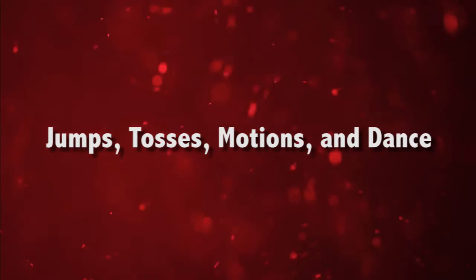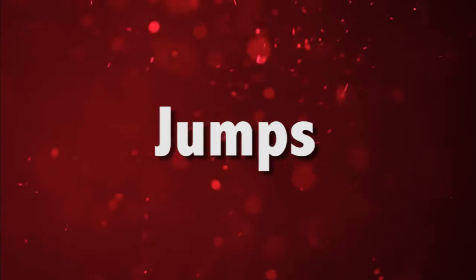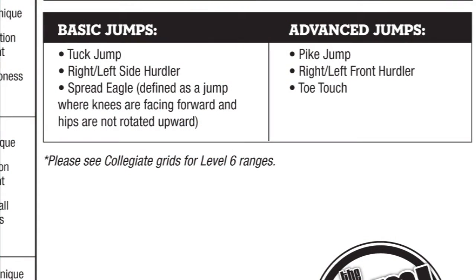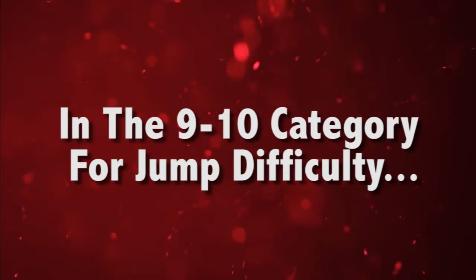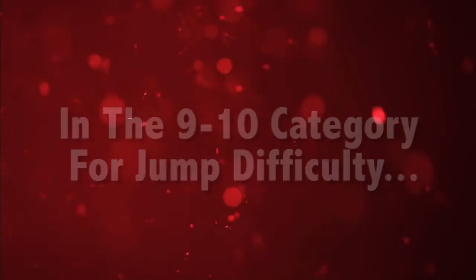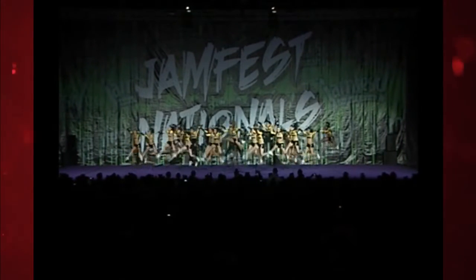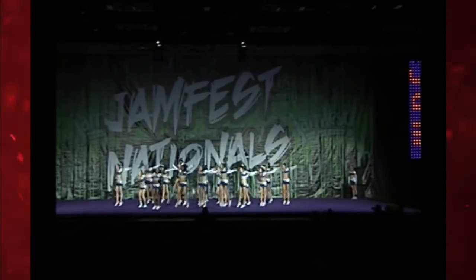For jump difficulty, a basic jump would be any of the following: tuck jump, spread eagle, right or left side hurdler. An advanced jump would be any of the following: toe touch, pike, right or left front hurdler. Please note that any level can score in the 9 to 10 category for jump difficulty. Examples shown represent the 9.4 to 9.5 range, the 9.7 to 9.8 range, and the 9.8 to 10 range for jump difficulty.